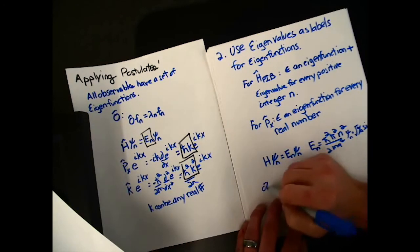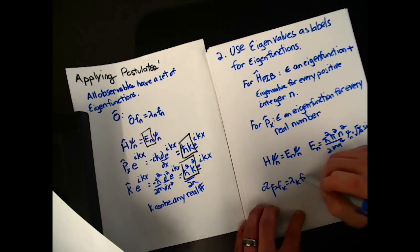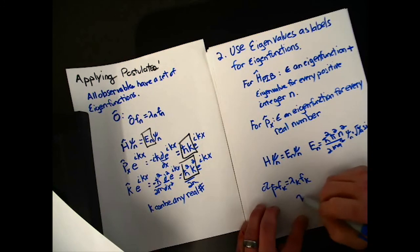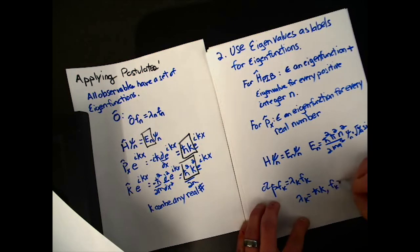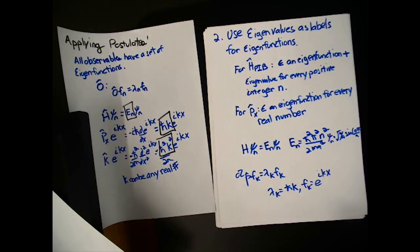Or p hat times f sub k, where lambda k is equal to h bar k, f sub k, f sub k equals e to the i k x. So, we're just using the number associated with the eigenvalue to label the function and the eigenvalue so we can pick it out. It just gives us a notation that we can use to pick out those functions.